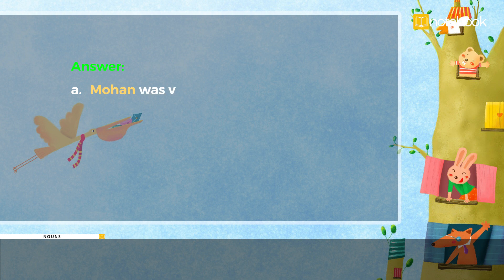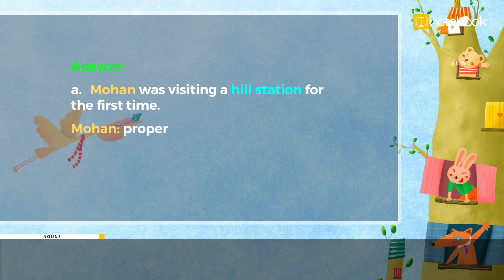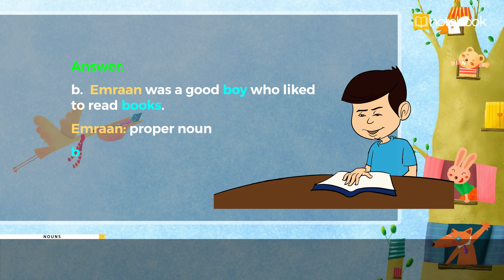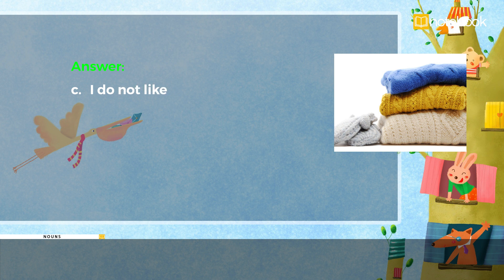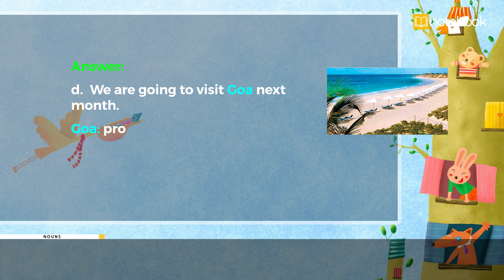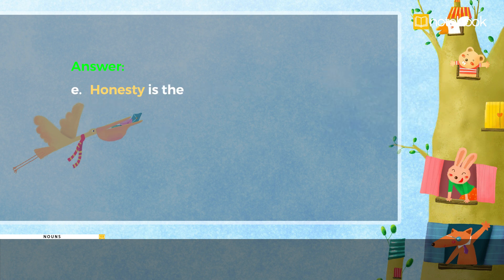Answers: A. Mohan was visiting a hill station for the first time — Mohan: proper noun; hill station: common noun. B. Imran was a good boy who liked to read books — Imran: proper noun; boy, books: common nouns. C. I do not like to wear woolen clothes — woolen: material noun. D. We are going to visit Goa next month — Goa: proper noun. E. Honesty is the best policy — honesty: abstract noun.